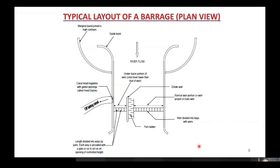The layout of a barrage means the plan of the barrage structure. In this layout, these two are the guide banks of the barrage, these are the main weirs, and these are the under sluice bays. These are called normal bays, and these are under sluice bays. The direction of flow of water is indicated here.